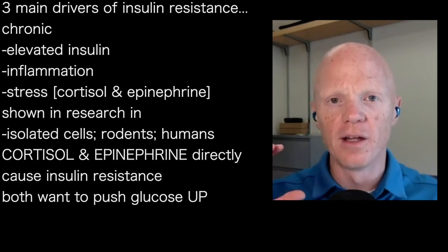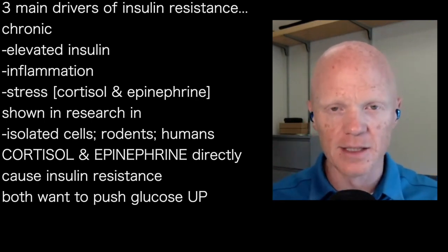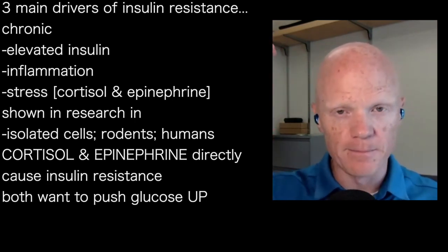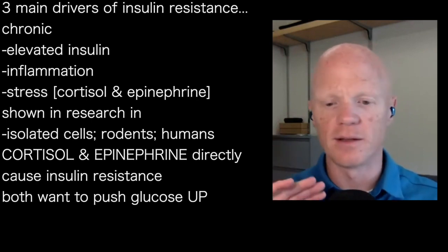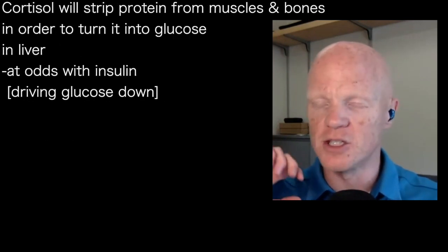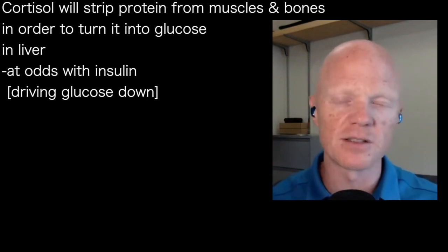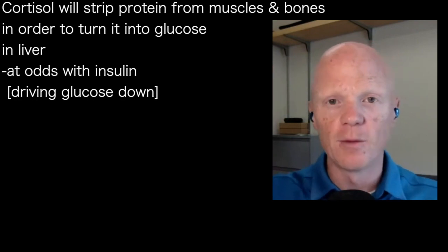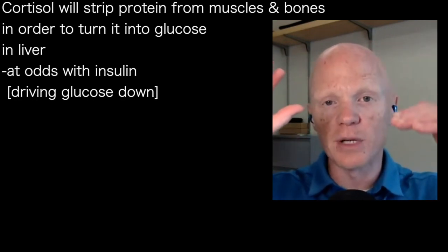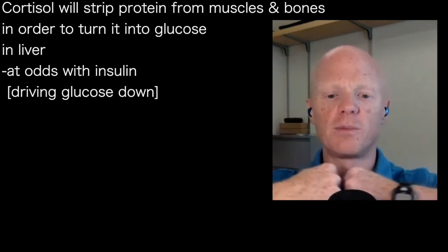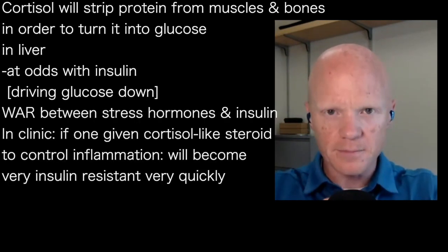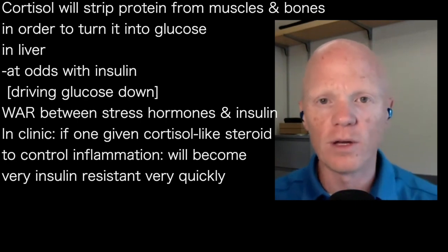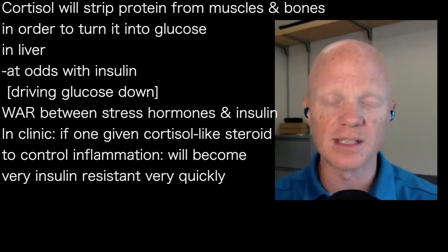Cortisol and epinephrine, among their many effects, share almost one thing in common: they want to push glucose up. Cortisol will literally strip protein from muscles and bones in order to convert it into glucose in the liver. This puts them at odds with insulin, which is trying to bring glucose down, and we basically end up with a war between the stress hormones and insulin. One consequence of that war is the body becoming insulin resistant.